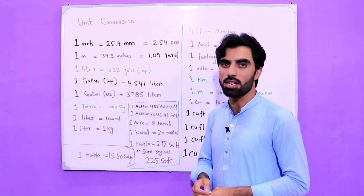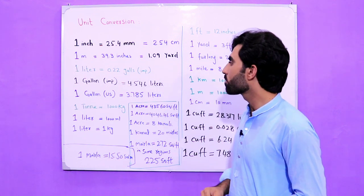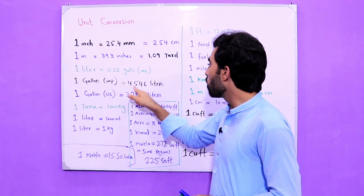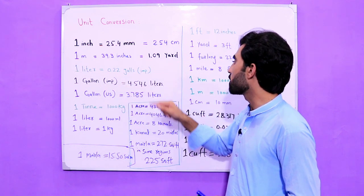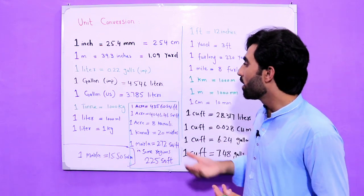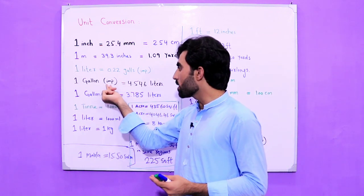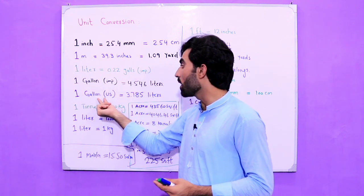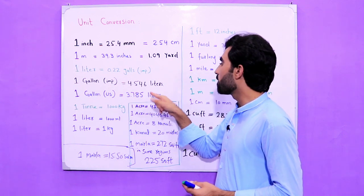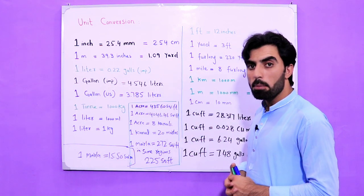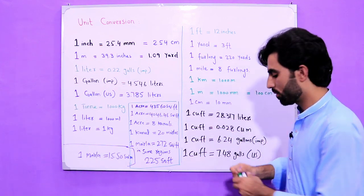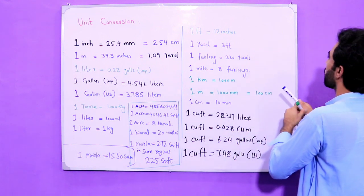One imperial gallon is equal to 4.546 liters of water or any liquid. Now, one US gallon is equal to 3.785 liters. So there is a difference between imperial gallons and US gallons. Now I will explain the best method by which you can do unit conversion — I will write here: big and small.